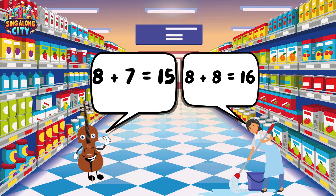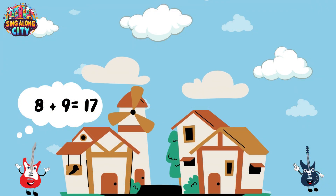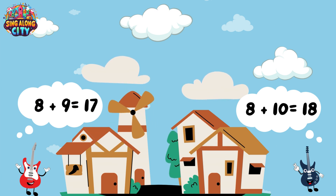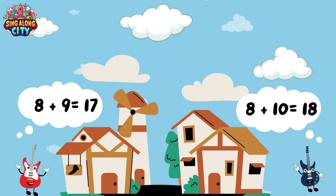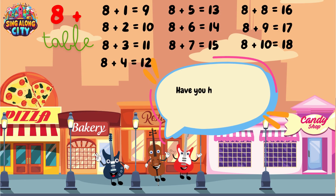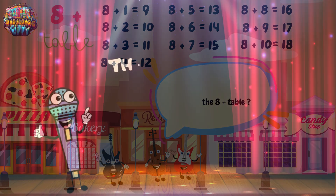8 plus 7 is 15. 8 plus 8 is 16. 8 plus 9 is 17. 8 plus 10 is 18. Have you heard the song about the 8 plus table? Well here it is.